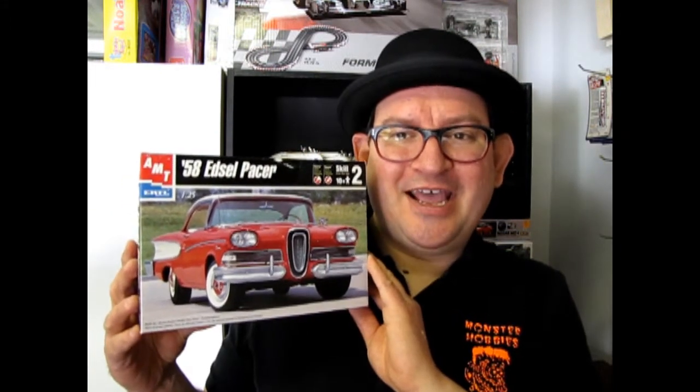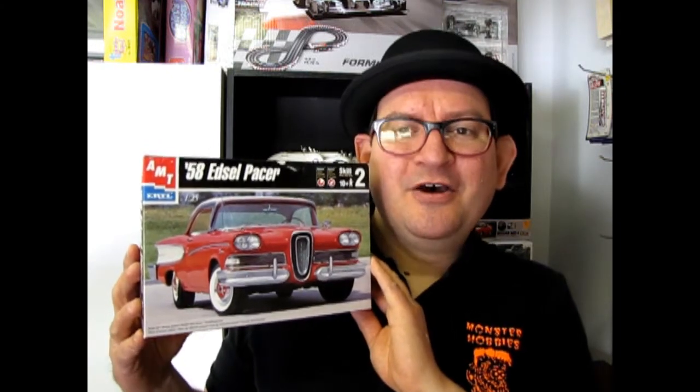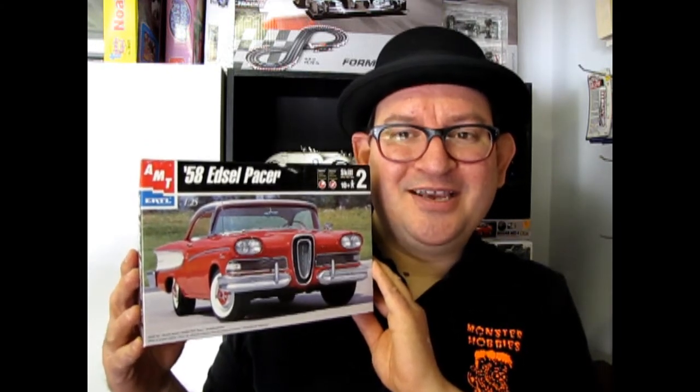Well here we go, the 1958 Ford Edsel Pacer, voted one of the worst cars in history, which is kind of sad because the reason why it was the worst car is because Ford released it on the market just a little too fast, and it was also voted one of the ugliest cars because of this horseshoe radiator.